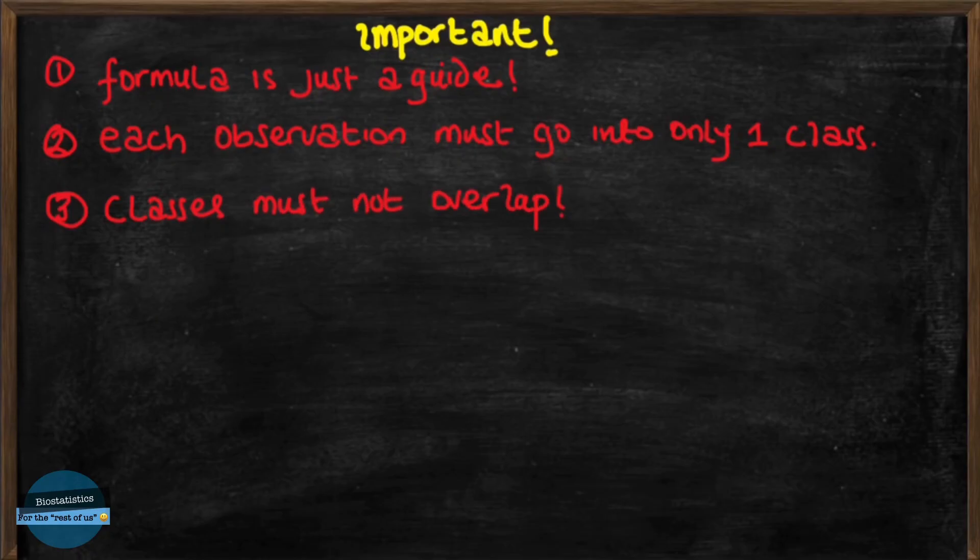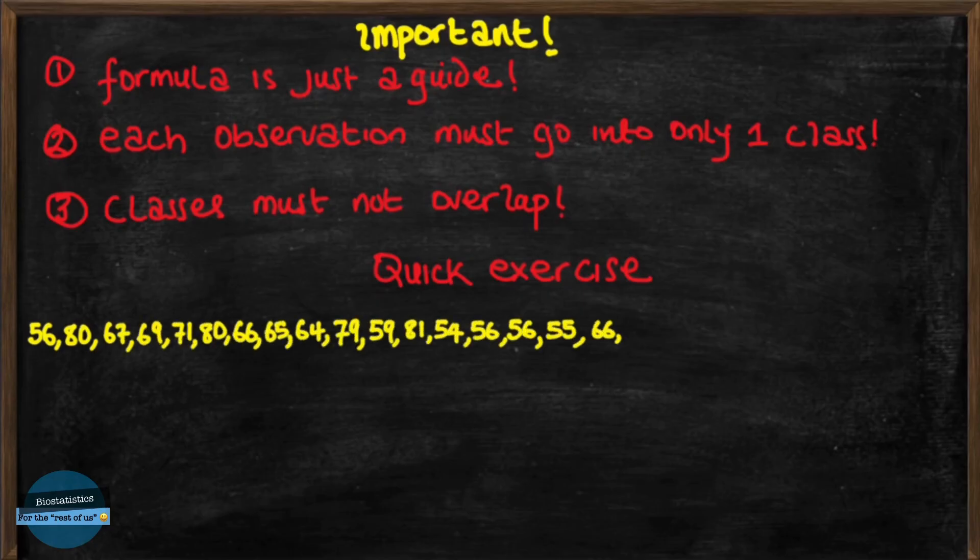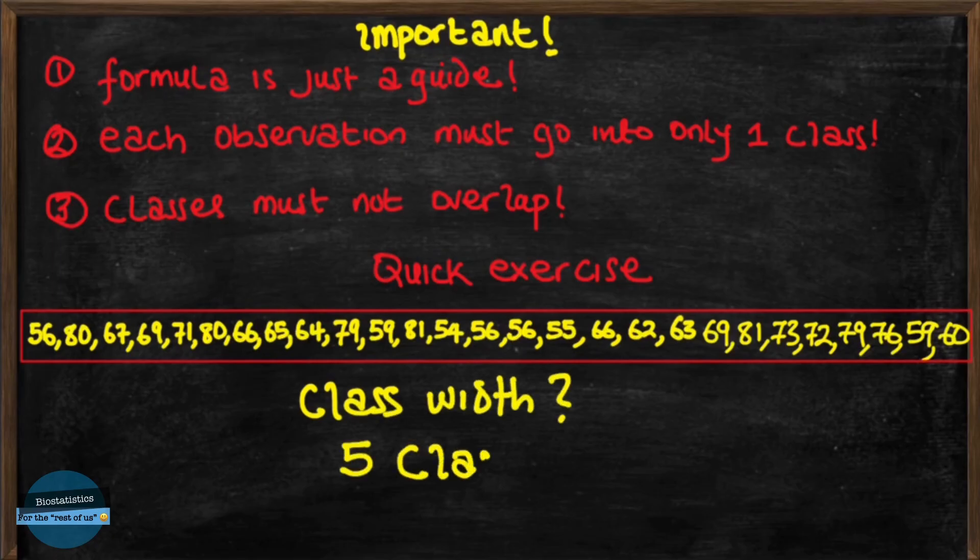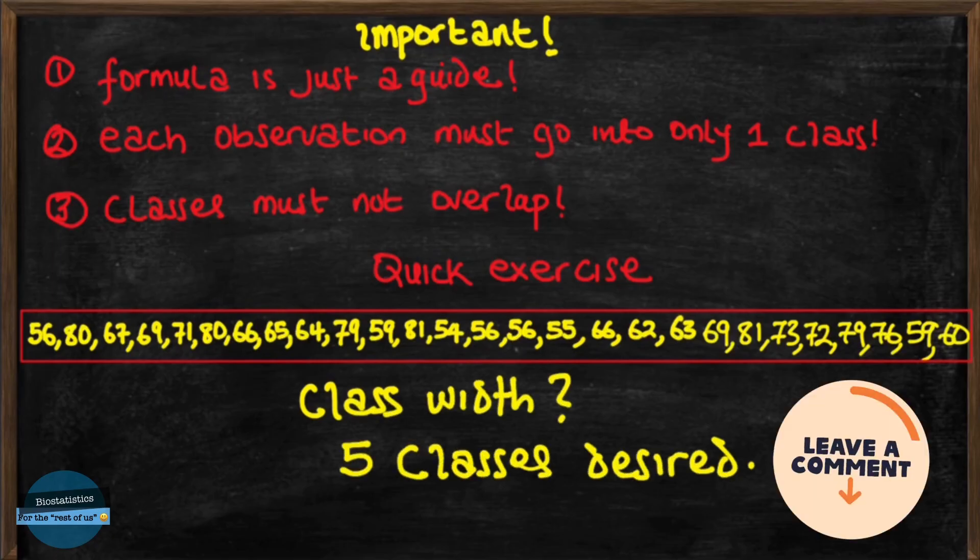So this is how to determine the width of a class when grouping numeric data. Now, here's a quick exercise for you. This is the data obtained from measuring the weights of patients in a diabetic clinic. What is the width of the class in a group frequency distribution when we desire to have about 5 classes?